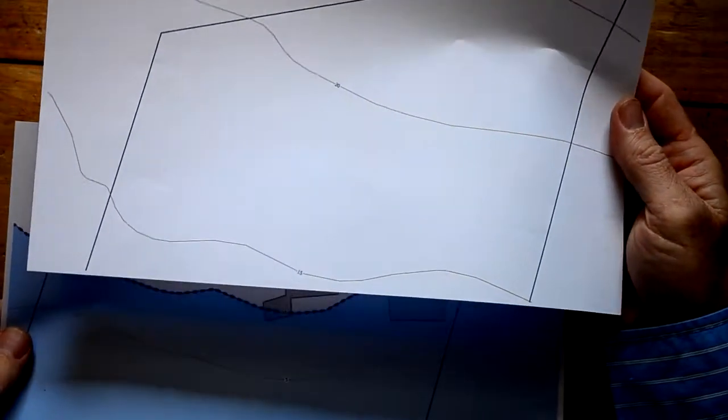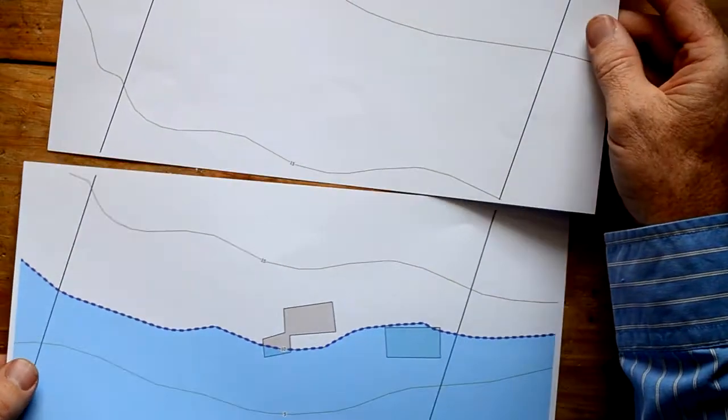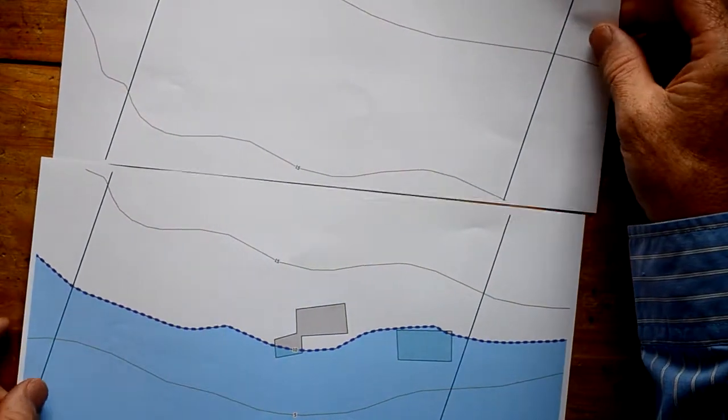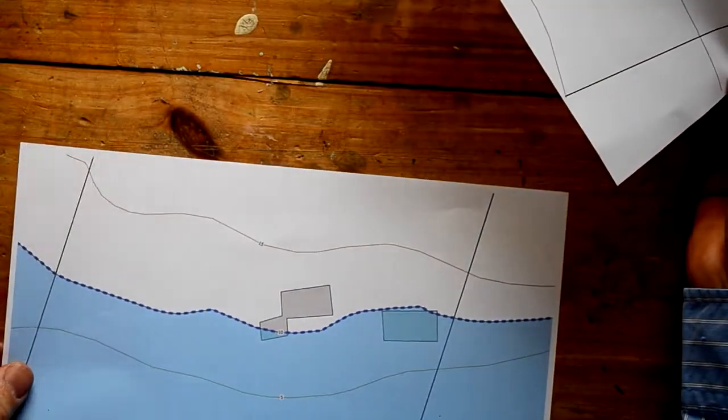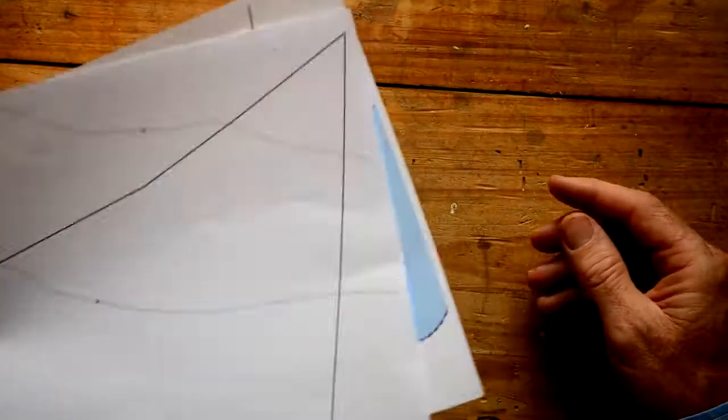Alright, so here we go. We've got our two pages that have been printed out and we just need to line these up and splice them together. If you had a lighting table, that would be the best bet.